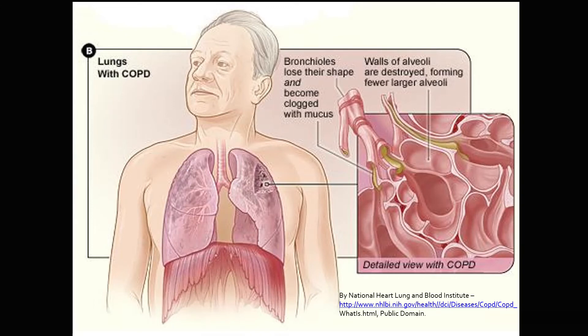Looking at the detailed view of COPD on the right, instead of having those nice grape-like clusters, the walls of the alveoli have become destroyed. Because of oxidative stress and inflammation, the walls of the alveoli have been destroyed and they're forming these large bulbous alveoli. The problem is that big alveoli don't have as much surface area as all those tiny ones. So we lose surface area and gas exchange capability. This is why patients with COPD eventually build up CO2 and decrease their oxygen levels — they don't have the surface area to do the gas exchange they could when the alveoli were normal.